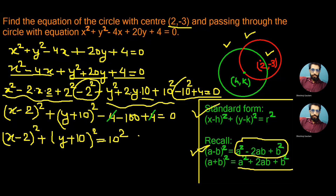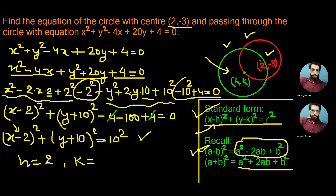Comparing this obtained equation with the standard form (x - h)² + (y - k)² = r², we get the center of the green circle. For h: the minus sign in the equation and minus sign in the formula give minus-minus = plus, so h = 2. For k: the plus sign in the equation and minus in the formula give plus-minus = minus, so k = -10. The radius is 10 units.